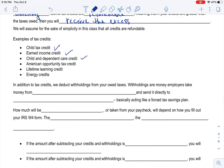In addition to tax credits, we deduct withholdings from your owed taxes. So withholdings are money employers take out, take money from our paychecks, which is so hard once you start seeing that. And they send it directly to the federal government, basically acting like a forced tax savings plan.